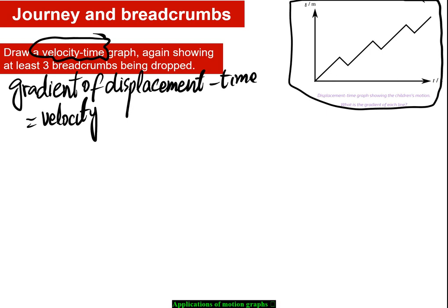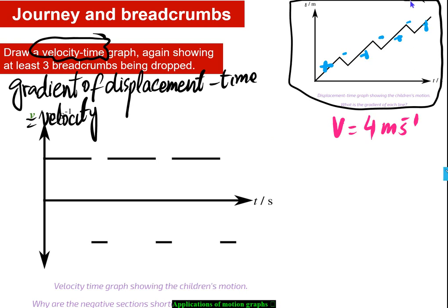Looking at each segment of the graph: the gradient of the first line is positive, the next is negative, then positive, negative, negative, negative, positive, negative, positive, negative, positive. Since speed was given as constant at 4 meters per second, the velocity alternates between +4 m/s (forward) and −4 m/s (backward). Here is the final velocity-time graph showing +4 and −4 meters per second.